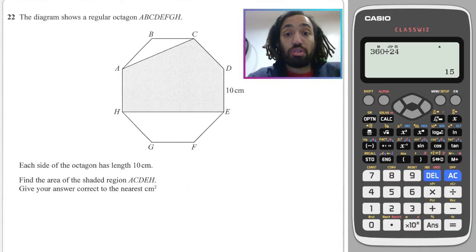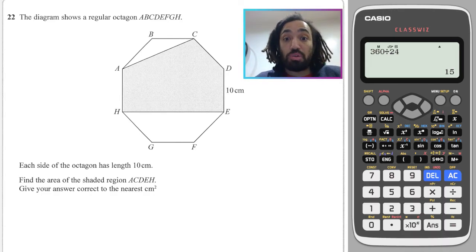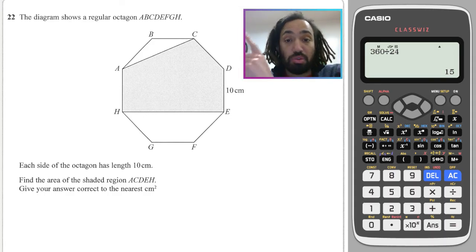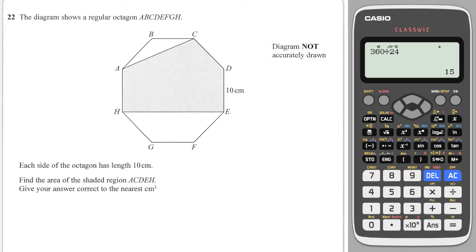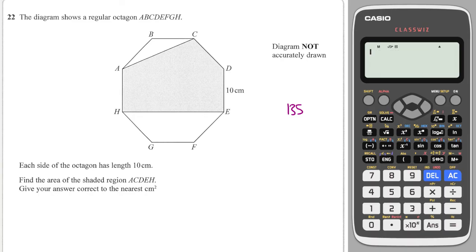The last question is a real tricky one involving multiple topics. We need to work out the shaded region of this regular octagon. We know the interior angle of an octagon is 135 — using 8 minus 2 is 6, times 180, divided by 8. If we put a centre point in the middle and draw lines to each corner, they split each interior angle in half. So 135 divided by 2 is 67.5 degrees.